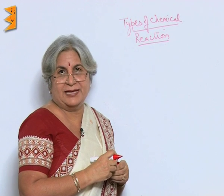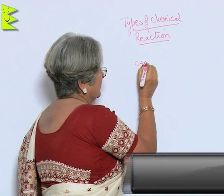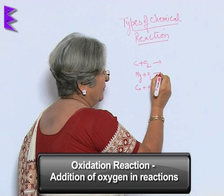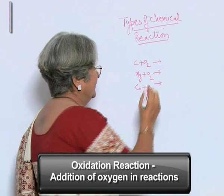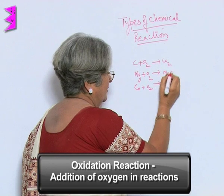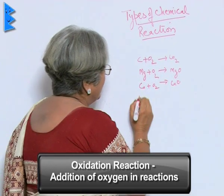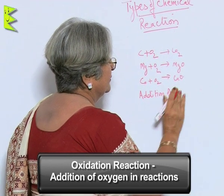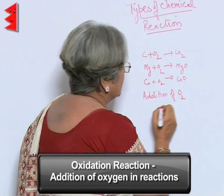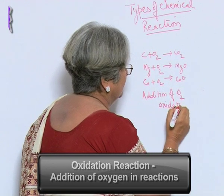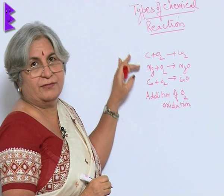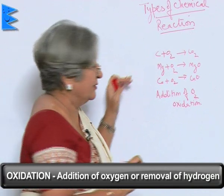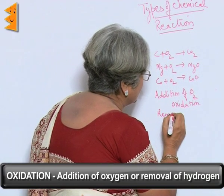When an element combines with oxygen — in this case, or this case, or this case — every time what we get is an oxide. What has happened is addition of oxygen, and this is called oxidation. So we can say carbon, magnesium, or calcium has been oxidized. Oxidation is not only addition of oxygen — removal of hydrogen is also oxidation.